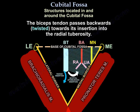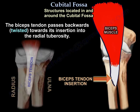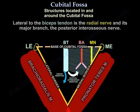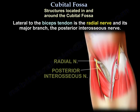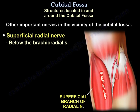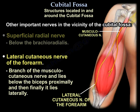The biceps tendon passes backwards towards its insertion into the radial tuberosity. Lateral to the biceps tendon is the radial nerve and its major branch, the posterior interosseous nerve. There are other important nerves in the vicinity: the superficial radial nerve, which is below the brachioradialis muscle, and the lateral cutaneous nerve of the forearm, which is a branch of the musculocutaneous nerve and lies below the biceps proximally.